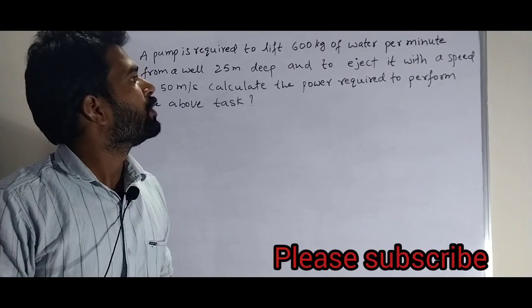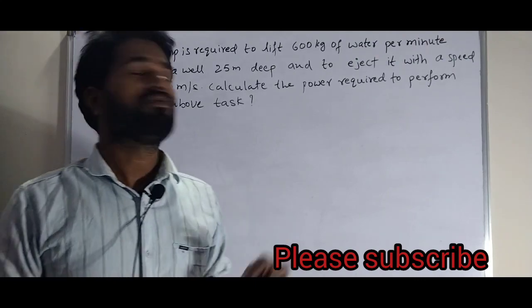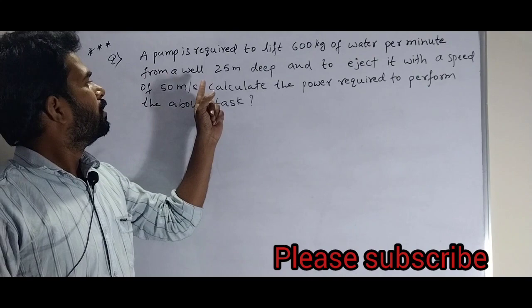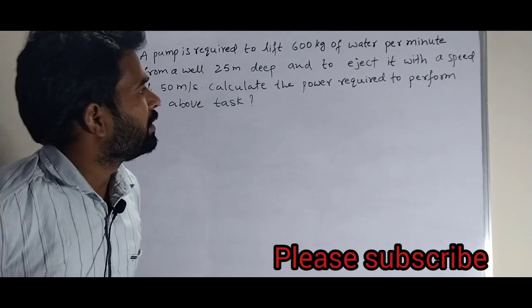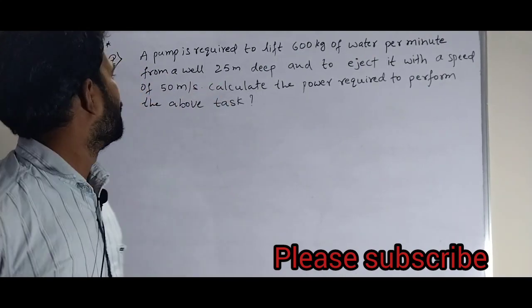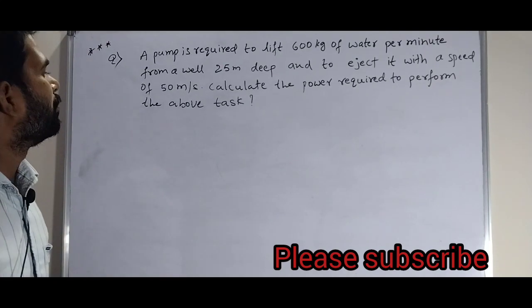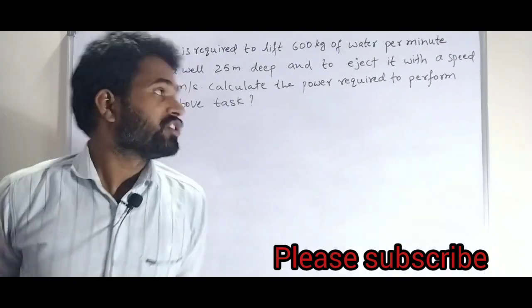One more question. A pump is required to lift 600 kg of water per minute from a well 25 meter deep and to eject it with a speed of 50 meter per second. Calculate the power required to perform the above task.